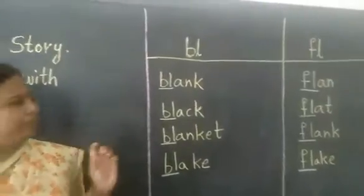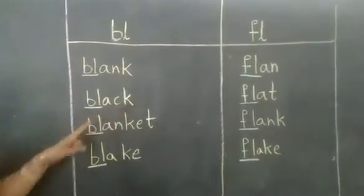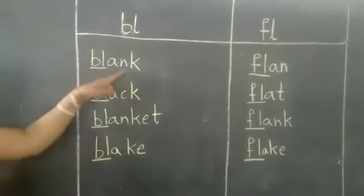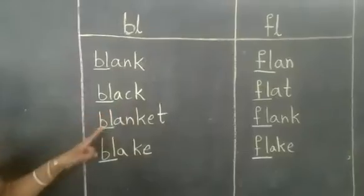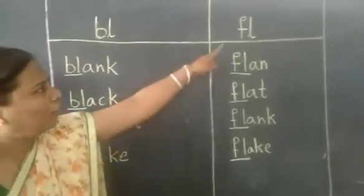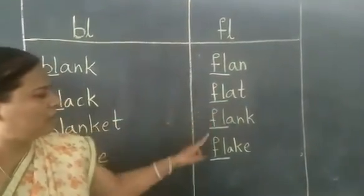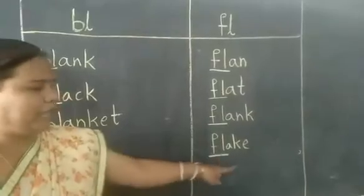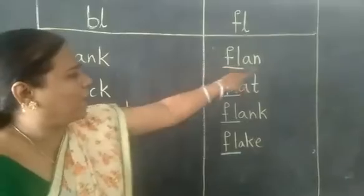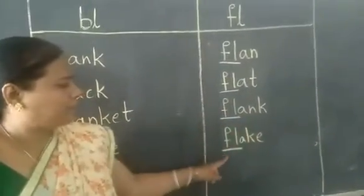Children, now I am going to show you some more words with BL and FL blends. Let us read: BLANK, BLANKET. Now the FL blend words — FLAN, FLAT, FLANK, FLAKE. Let us read them once again: FLAN, FLANK, FLAKE.